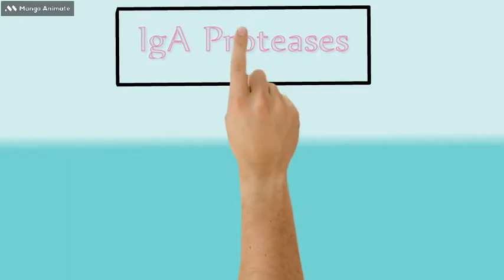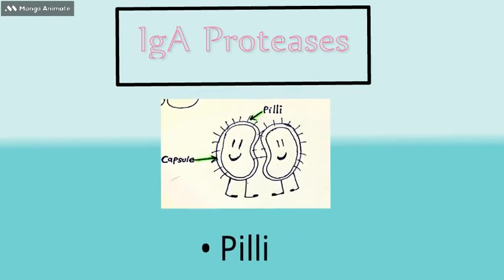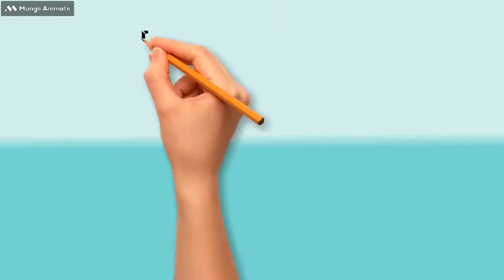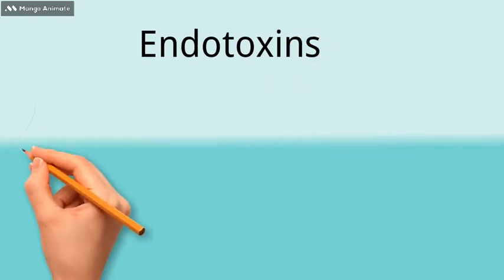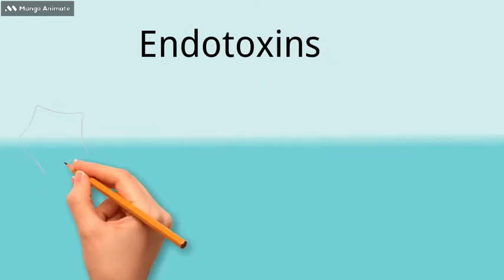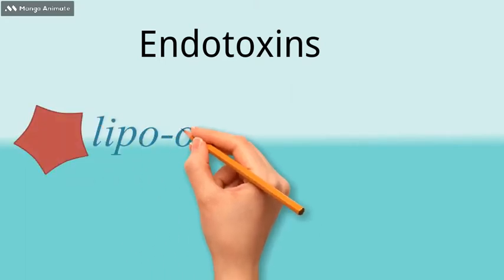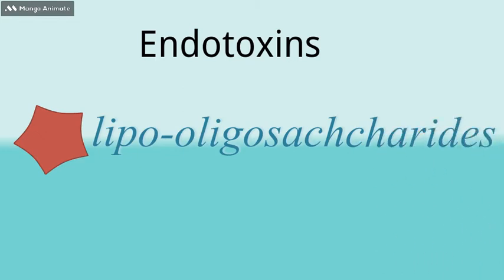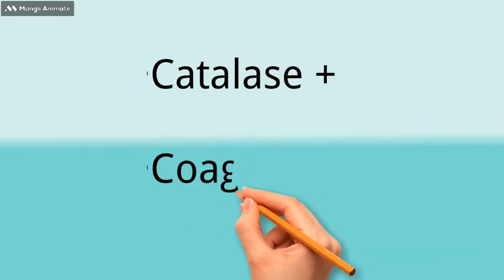They secrete IgA proteases, which is another important virulence factor. Also, they have pili for adherence. As they are gram-negative bacteria, they have endotoxins in their cell wall. Usually, gram-negatives have lipopolysaccharides as endotoxins, but this is a bit different. Meningitidis has lipooligosaccharides as endotoxins. Also, they produce catalases and coagulases.